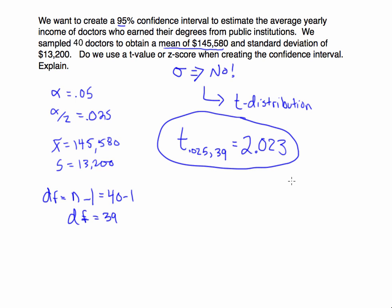We're doing all this because we have the requirements met for the central limit theorem. For the central limit theorem, we need to check that either the population is normal, or that the sample size is greater than 30. We're not told the population is normal, but our sample size of 40 is greater than 30, so we can continue. We should check this at the beginning, but now that we've remembered, we're doing it at the end.